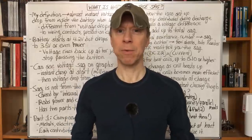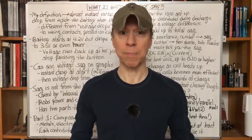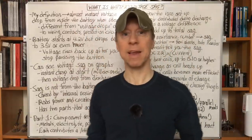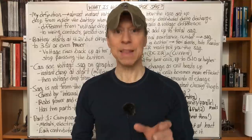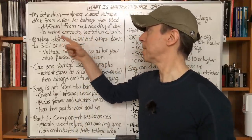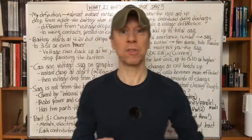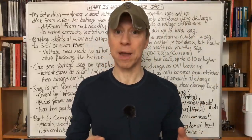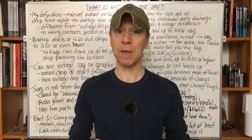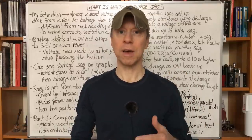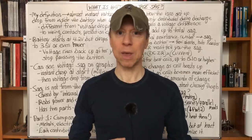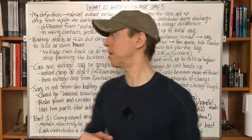Basically, battery voltage sag is a voltage drop — a type of voltage drop. My definition is the almost instantaneous voltage drop you see within the battery, not the voltage drops from wiring of the mod, contacts, protection circuits, or other things external to the battery. So technically it's just another one of the voltage drops you might see in a circuit or inside a mod, but I use the term voltage sag to differentiate between these external ones and what happens inside the battery.